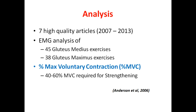This presentation is based on the results of seven high quality articles published from 2007 to 2013. In total, the articles looked at around 45 glute med exercises and about 38 glute max exercises. They all used percentage of maximal voluntary contraction (MVC) as their outcome measure. Previous studies from Anderson have shown that you need at least 40 to 60% MVC for strengthening; less than that may not be useful for strengthening purposes.